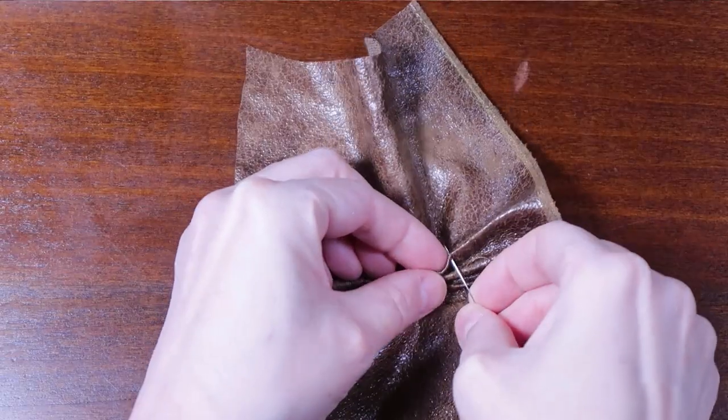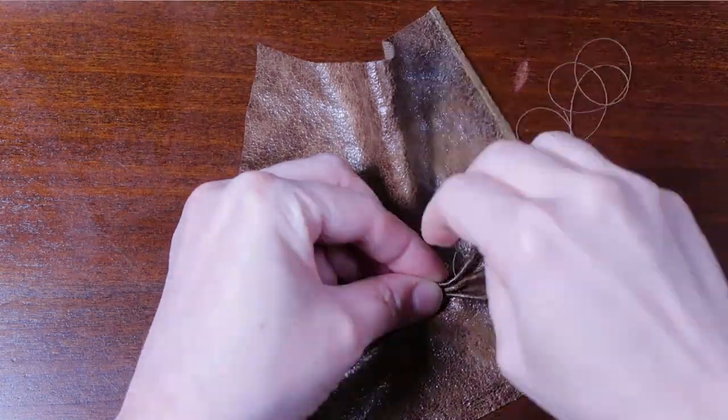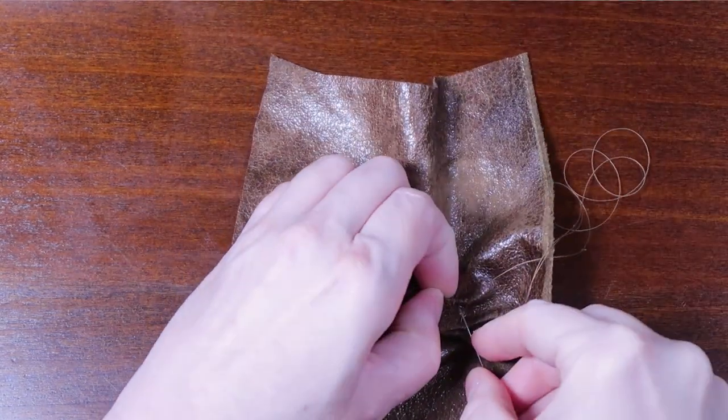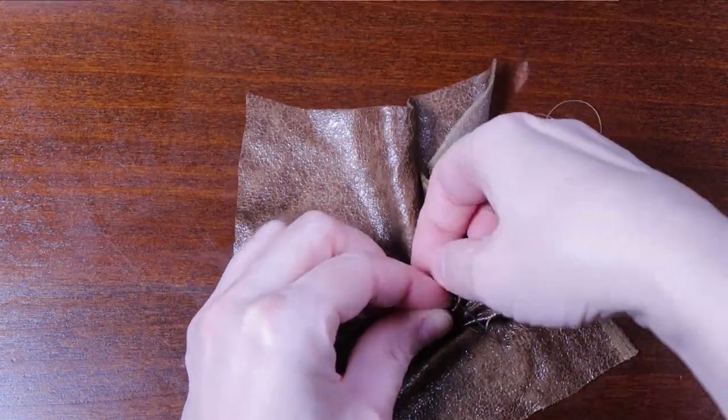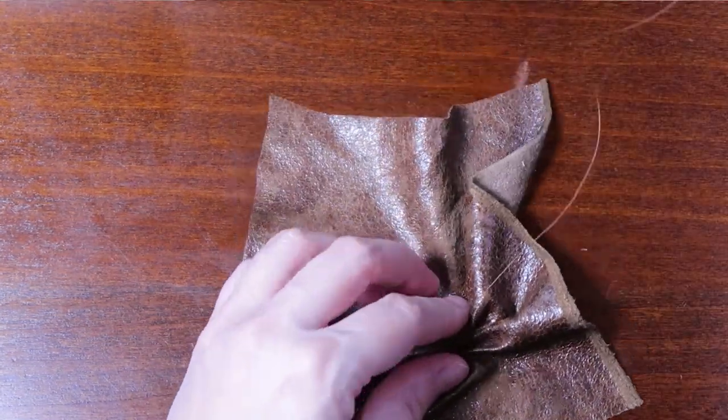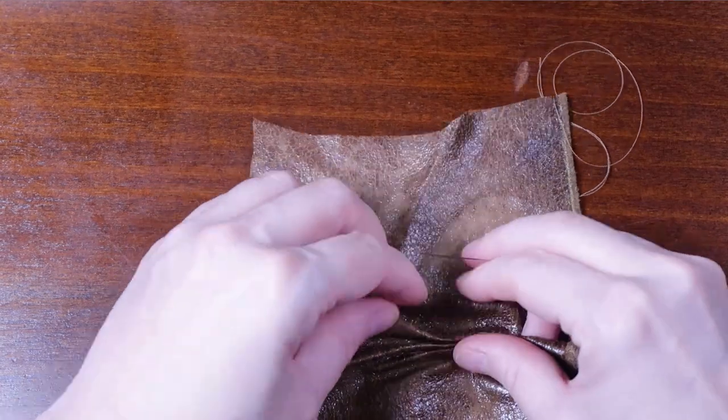But the top, I kind of want to be wrinkly. I wanted to show wrinkles where the hat is slumping over at the top. So I only glued the brim. And then I used a needle and thread and sewed on the sides to gather it a little bit.